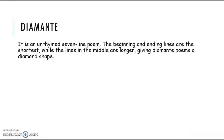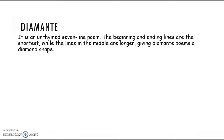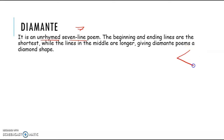So what is Diamante? Diamante is an unrhymed 7-line poem. Remember, it is unrhymed and it consists of 7 lines. The beginning and ending lines are the shortest while the lines in the middle are longer, giving Diamante poems a diamond shape. So when you have finished writing this poem, your poem is going to have a shape like a diamond. Diamante is an Italian word, and it means diamond.